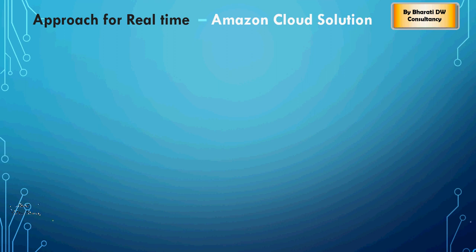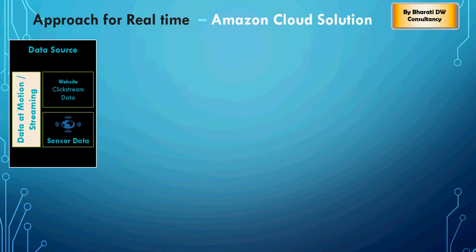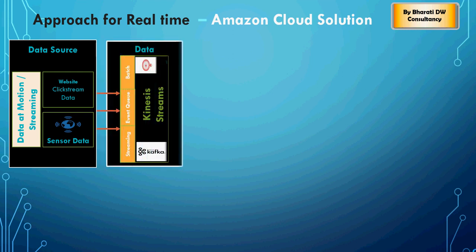We are going to talk about how to create a real-time solution on Amazon Web Services, AWS. We will assume a website with extreme data coming in from the browsing sessions, web logs from a browser, or sensor data, and then we are going to take that into the Amazon service using Kinesis Streams.